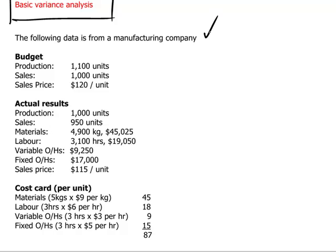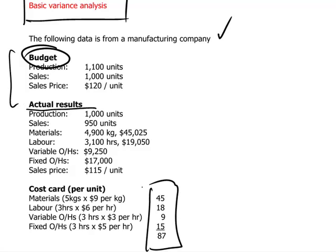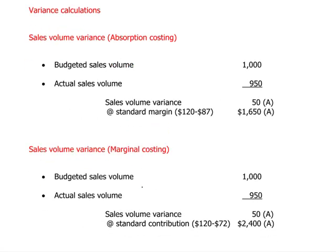We have data from a production company showing budgeted production and sales figures alongside actual results, and a starting cost card to steer by. Based on this information, which is typical of an exam-type question, the candidate will be expected to put together a basic variance analysis. Let's go through the calculations that achieve this.